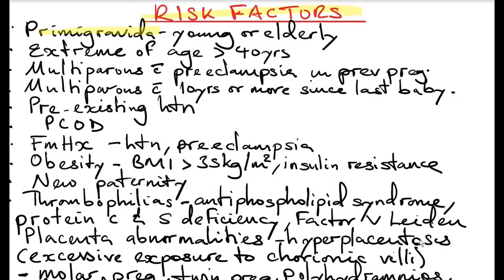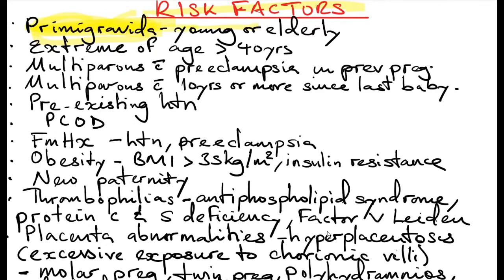Risk factors: Primigravidas — those in their first pregnancy — are more commonly affected because this is their first time exposure to the trophoblast. In the normal fetal-maternal transfusions that occur during pregnancy and especially during delivery, the mother is exposed to products of the fetal genome, which provide protection in subsequent pregnancies. This also occurs with new paternity, because the protective effect of the first pregnancy seems to be lost if a woman has a child with a new partner, suggesting immune intolerance.